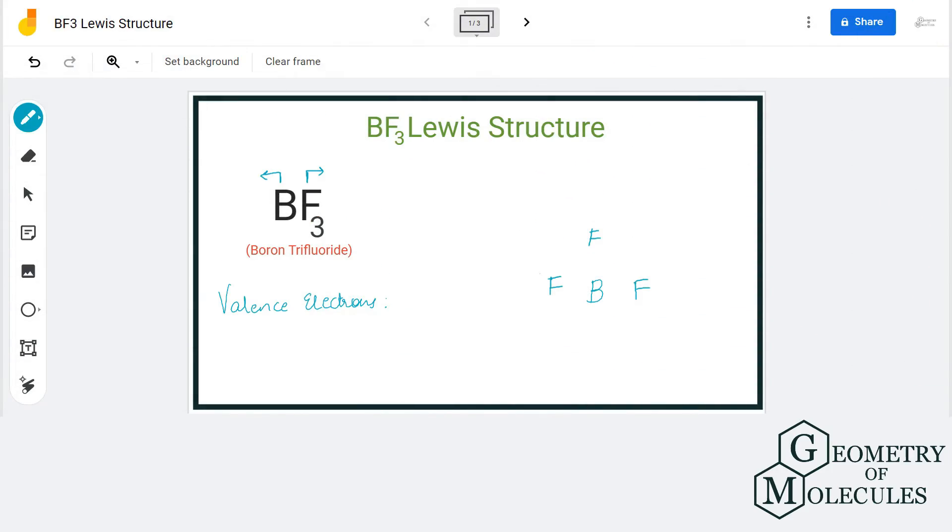Hey guys, today in this video we are going to look at the Lewis structure of BF3, boron trifluoride. To understand its Lewis structure, we'll first check the total number of valence electrons for this molecule. Boron has three valence electrons.